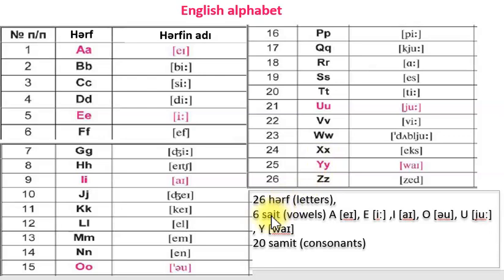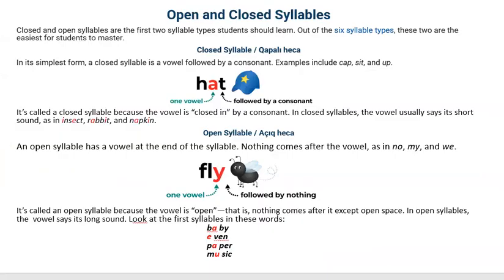Now children, there are 26 letters in the English alphabet. Six of them are vowels: A, E, I, O, U, Y. And 20 of them are consonants. İngilis əlfbasında 26 hərf var, 6-sı sait, 20-si isə samitdir.